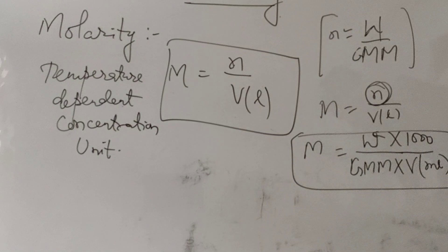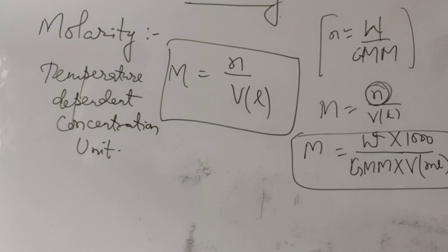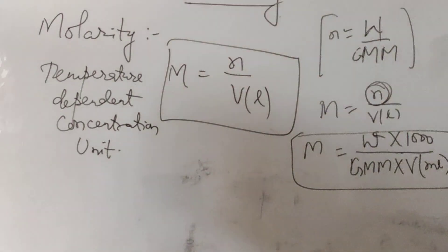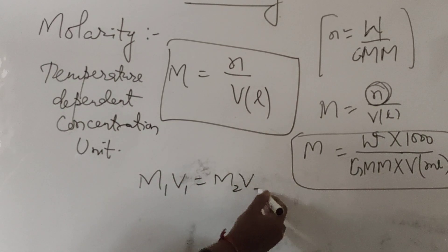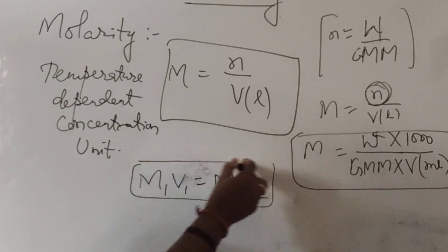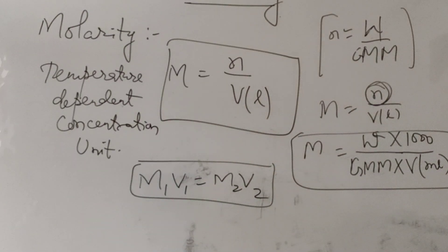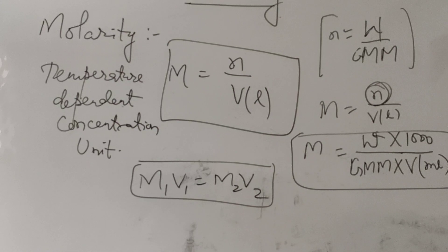If we add more water and do a dilution, then molarity changes. The molarity dilution equation is M1 V1 equals M2 V2. This equation applies when we mix more volume into the solution.